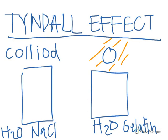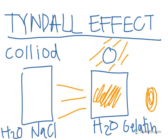With the solution, you won't be able to see the light. But the one that's a colloid, the light will be visible because its particles are large enough to distort the light. So you see the water with the gelatin is actually a colloid, while the NaCl is a solution because you can't really see the light.